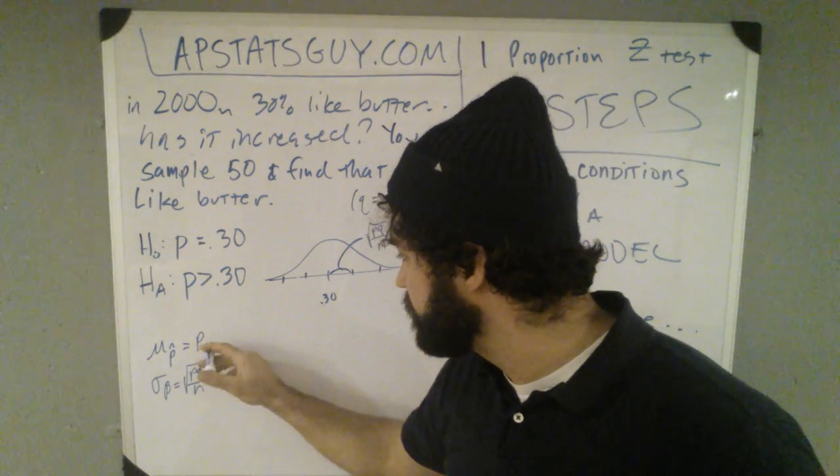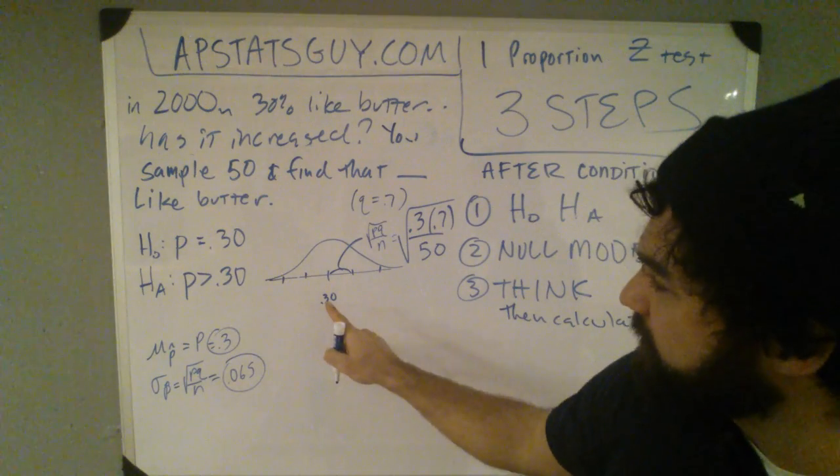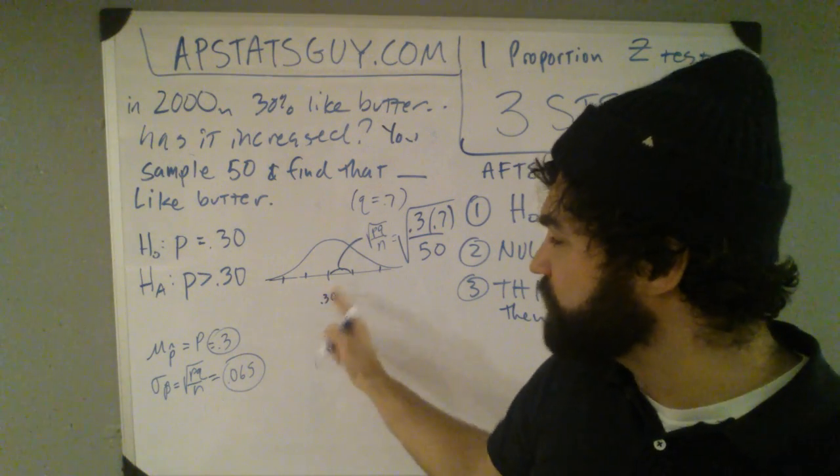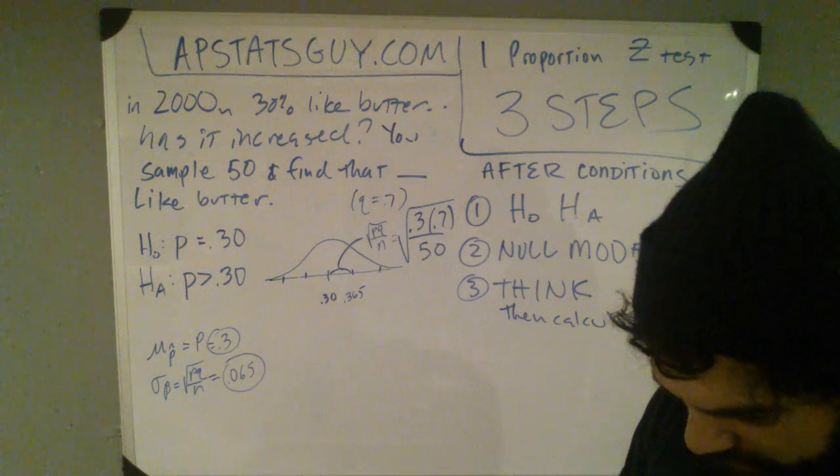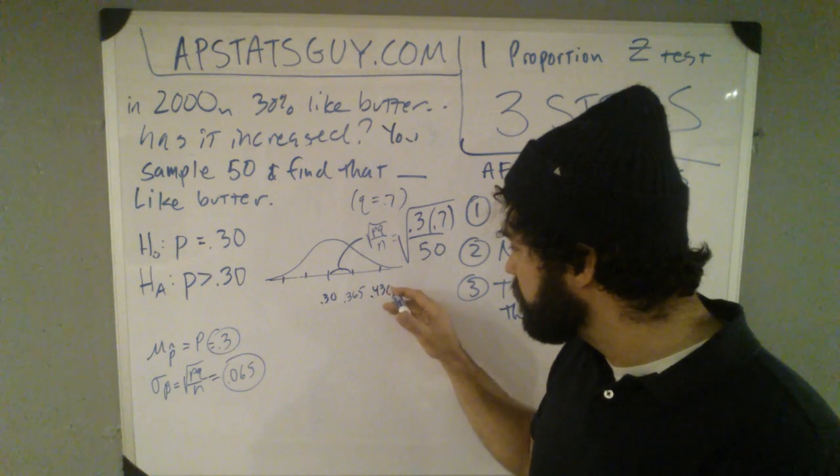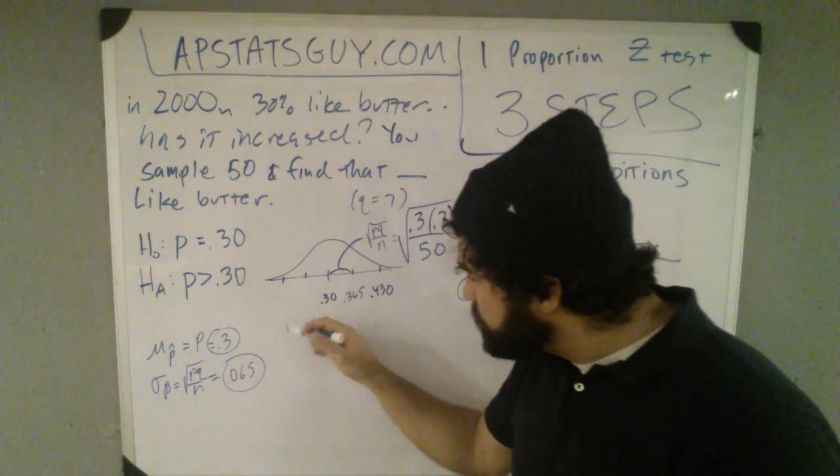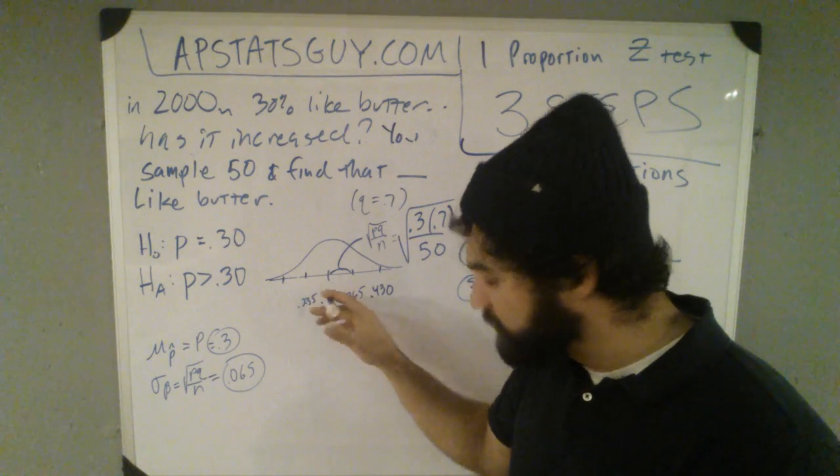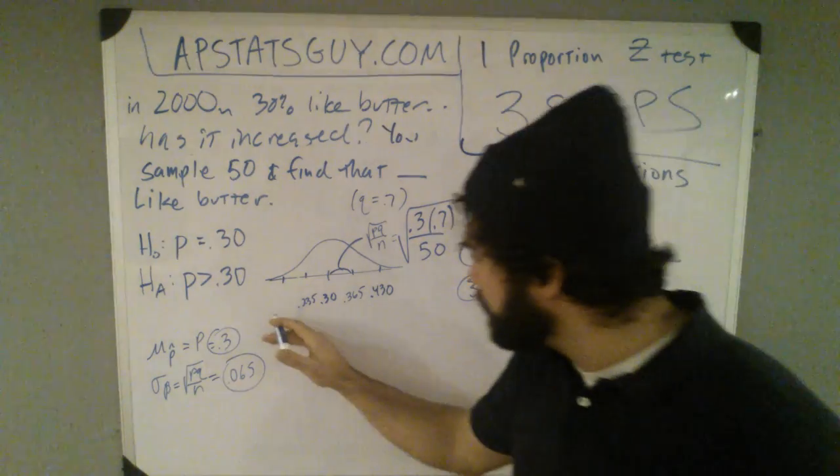So I know that this model is centered here, and you expect it to be centered there. And I know that if I take a bunch of p-hats, it's 68% of the time, it's going to be between .365, hold on, let's go up, .365, .430, .235, I'm going down 6.5, .235, and if I go down 6.5 again, I get about 17%.